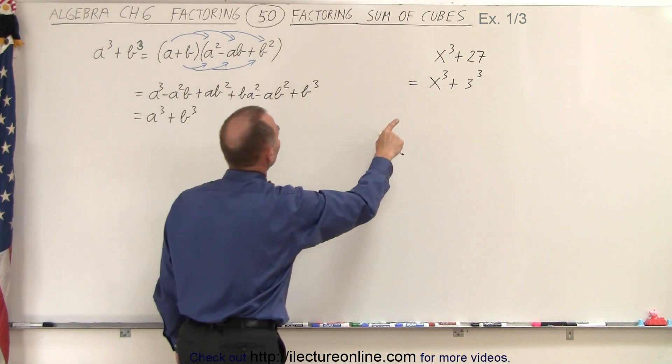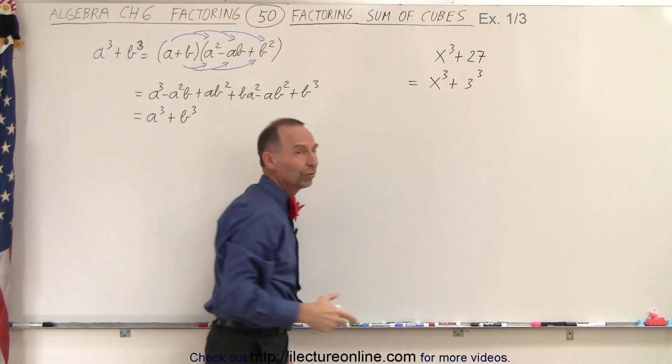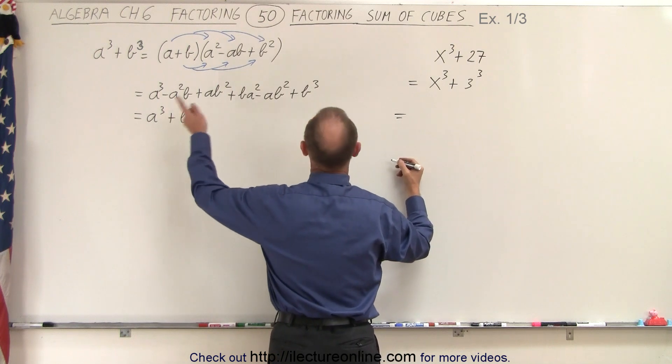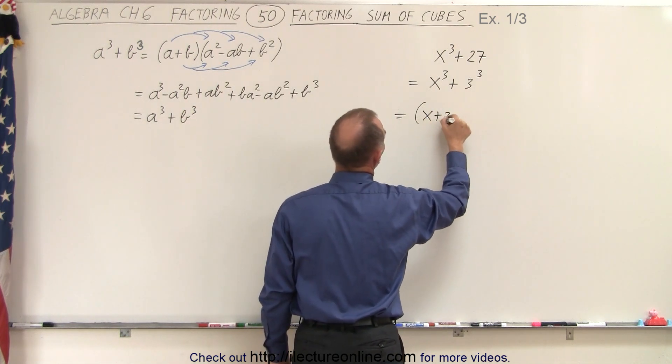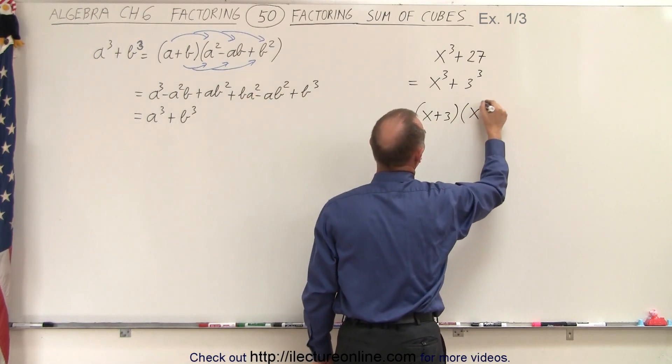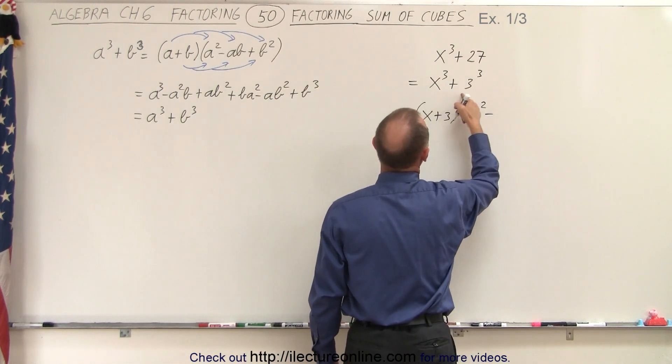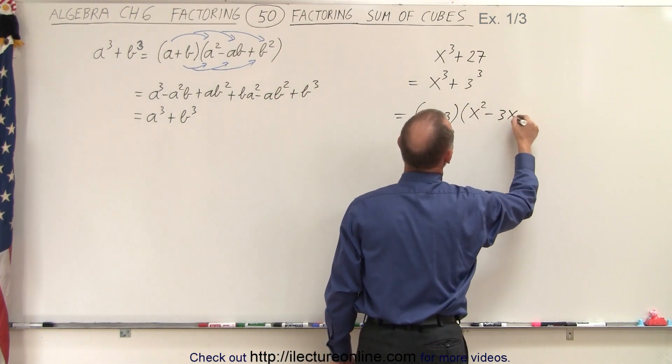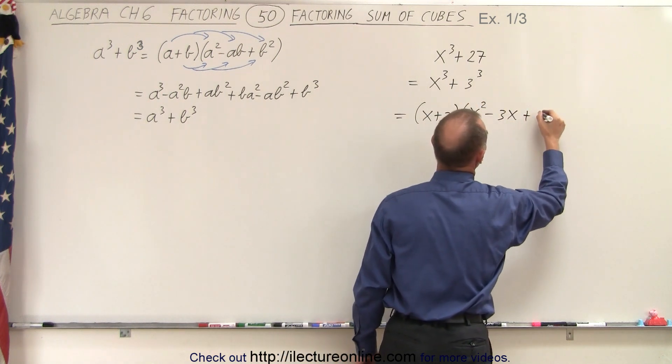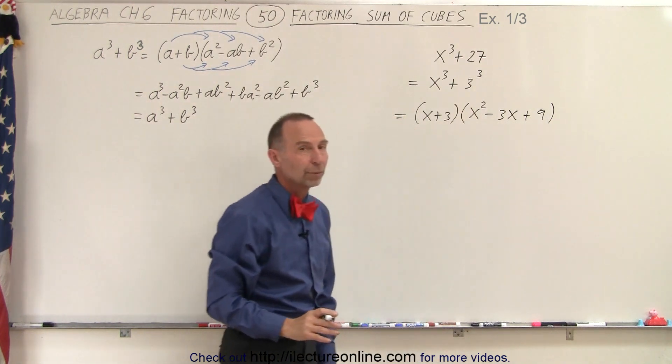So in this case, we can see that a is equal to x and b is equal to 3. So we use the very same process. So this can be written as a plus b, which in this case would be x plus 3 times a squared, which is x squared minus a times b, which would be 3 times x, plus b squared, which would be 3 squared or 9. And so this is then the factored form of our original problem.